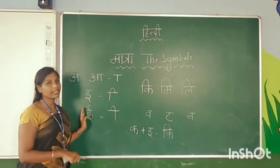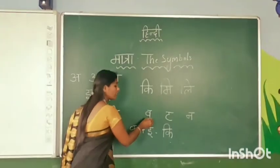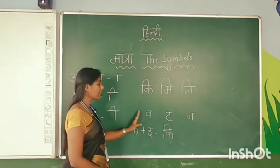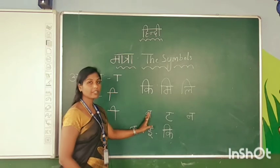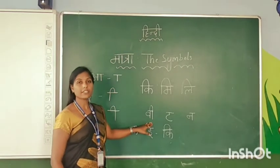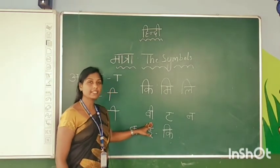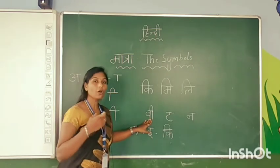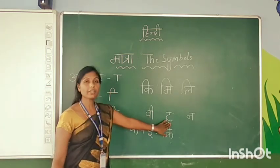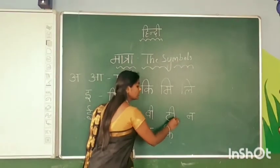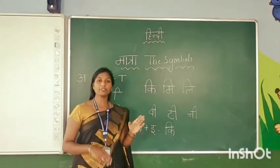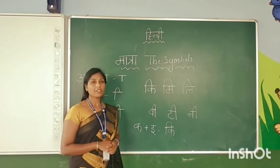Now I am going to join the long EE sound. The letter is Wa. I am going to join this symbol after the Vyanjan letter. Wa plus EE is equal to Wee. It gives a long sound — Ki becomes Kee, Si becomes See, Ri becomes Ree, like this. Now joining with Ta, it will become Tee, and Ni as well.